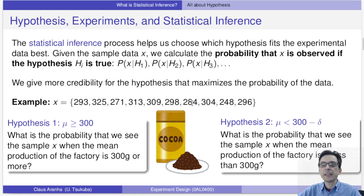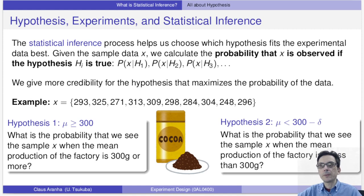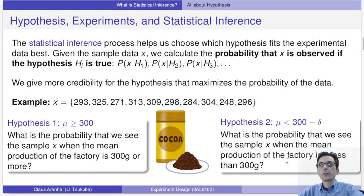The process of statistical inference is: given the data observed in the experiment, we calculate the probability that this data would happen if hypothesis one were true, and the probability that this data would happen if hypothesis two were true. So if the experiment data is X, we calculate P(X | H1), P(X | H2), P(X | H3), and so on. In our two-hypothesis case, given that we observe weights like 209, 325, 271, 313, etc., what is the probability this data would happen if hypothesis one were true, and what is the probability if hypothesis two were true?